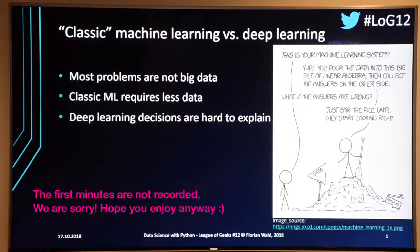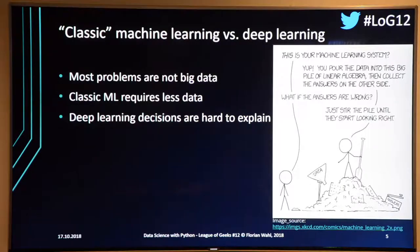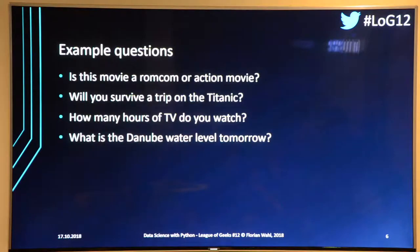Consider whether you'd trust a deep learning algorithm you don't understand to trigger your airbag. Maybe, maybe not — it's something really worth thinking about. If you put a bit of brains into the modeling aspects, you can get pretty good results also with classical machine learning. So what are some example questions we could work with?